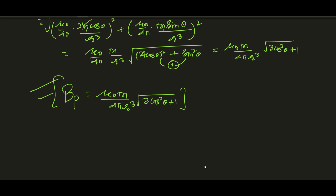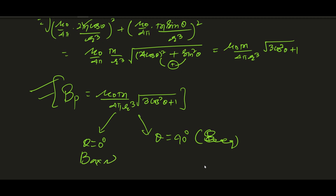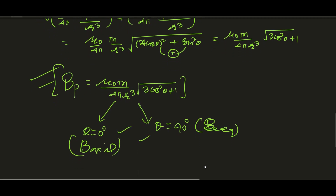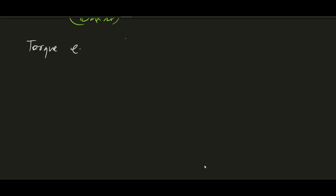This formula was already proved in the electric field by the same method. You should verify: if θ = 0°, you get B-axial; if θ = 90°, you get B-equatorial. Now, the most important topic — which was asked last year in the CBSE exam — is the torque experienced by a dipole in a uniform magnetic field, just like in the electric field.